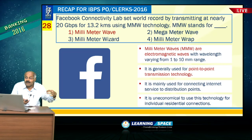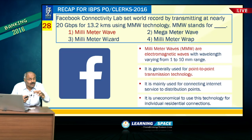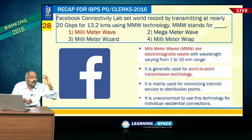Facebook Connectivity Lab set a world record by transmitting at nearly 20 Gbps for 13.2 kilometers under MMW technology. MMW stands for millimeter wave technology — these are electromagnetic waves generally used for point-to-point transmission.